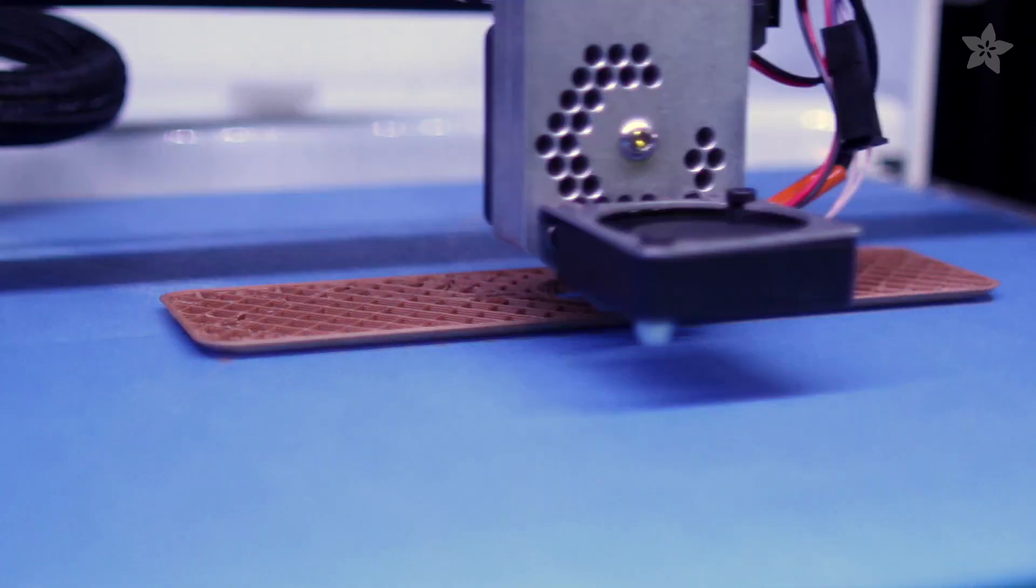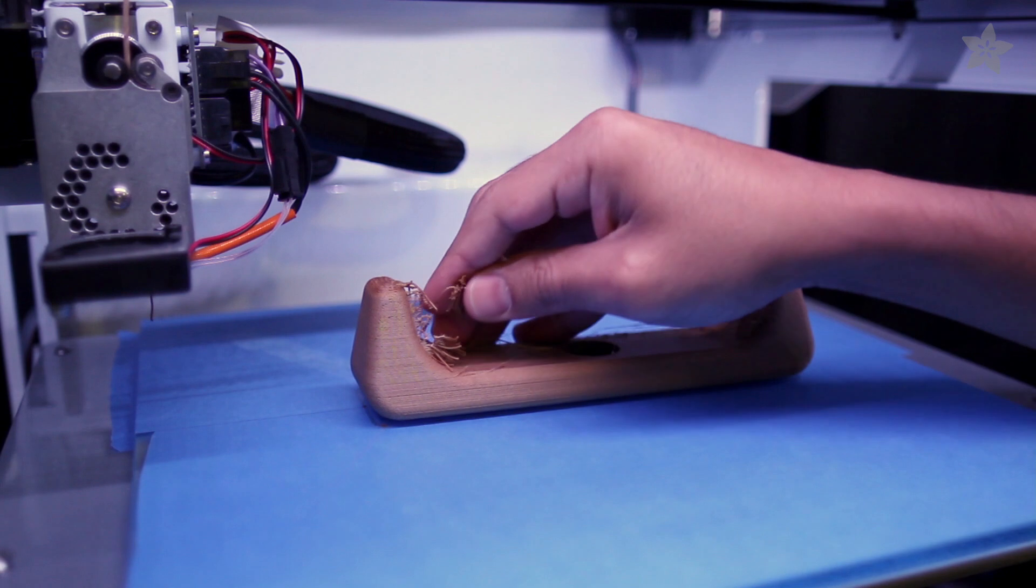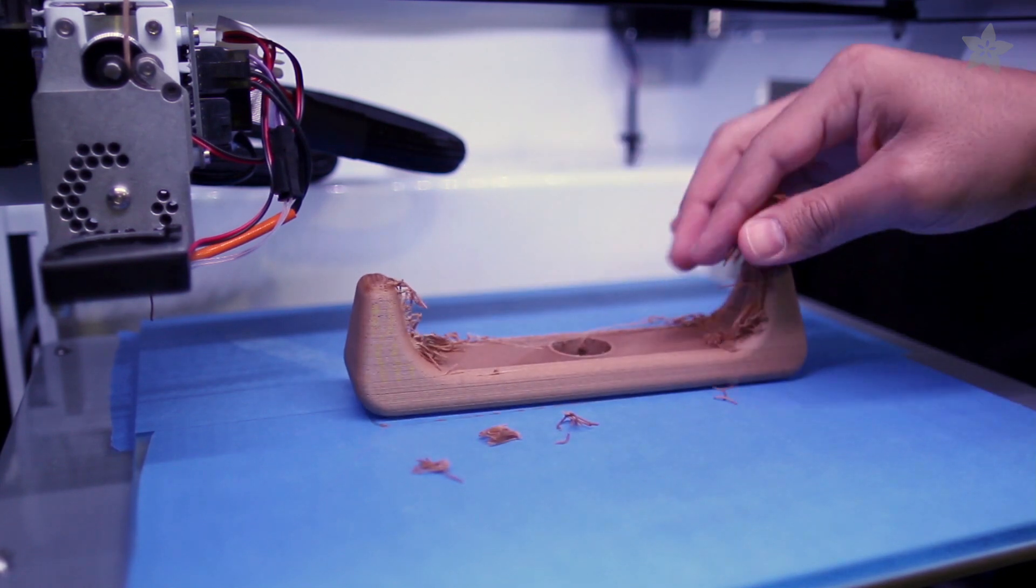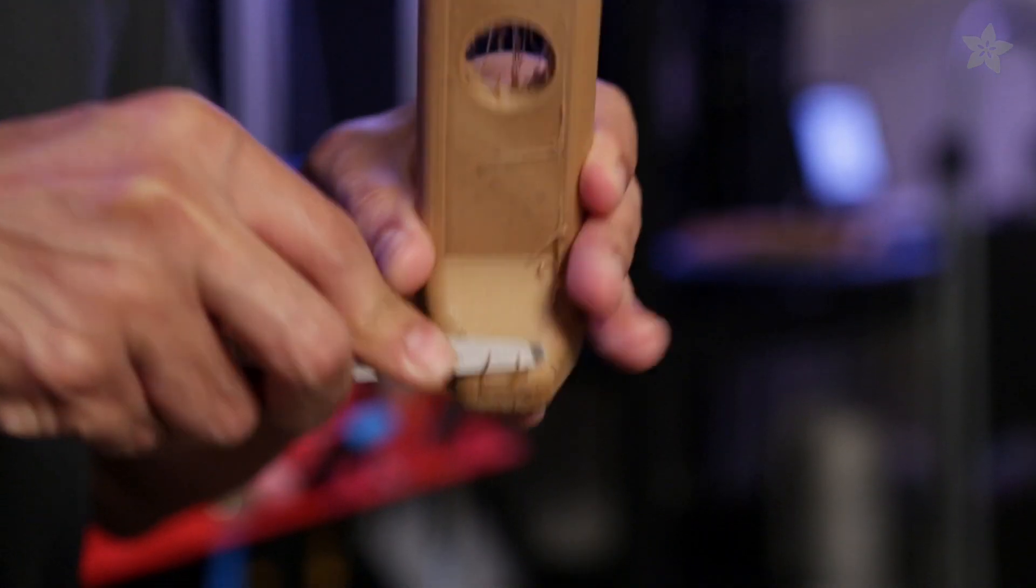Use slower or no retractions to avoid the gears from grinding the filament. Cleanup is very simple; leftover bits from retraction are easy to pull off with your bare hands. They shouldn't be sharp, just be careful not to get any splinters.